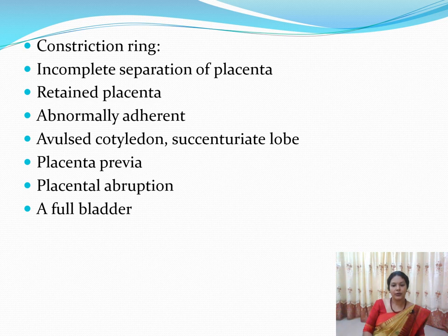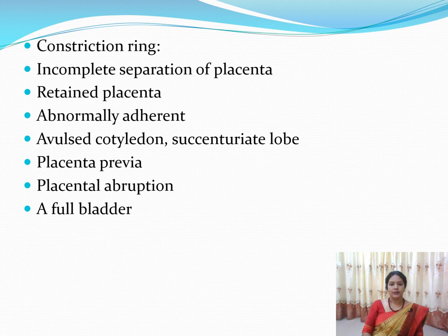The second T — Tissue — refers to retained bits of placenta or fetal membranes inside the uterus after delivery, leading to profuse bleeding. This can occur due to a constriction ring (hourglass constriction): a ring-like spasmodic contraction — annular spasm — of the circular uterine muscles, usually between the upper and lower segment, which prevents the separated placenta from passing out. Incomplete separation of the placenta is another cause.